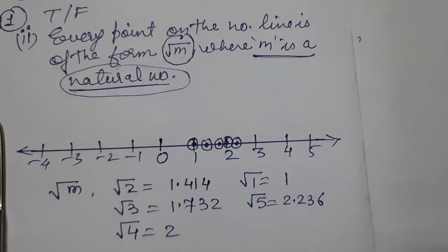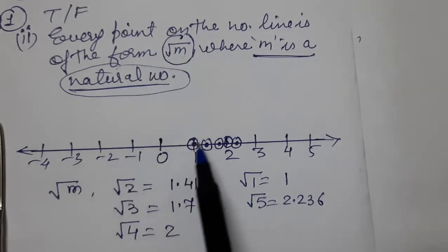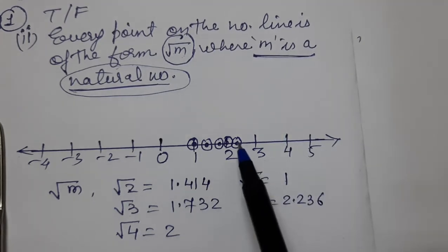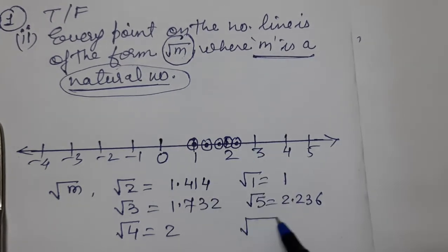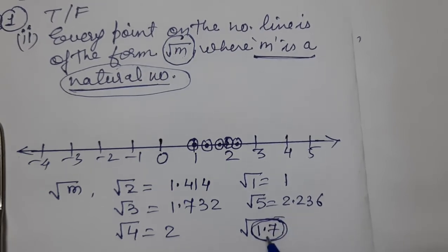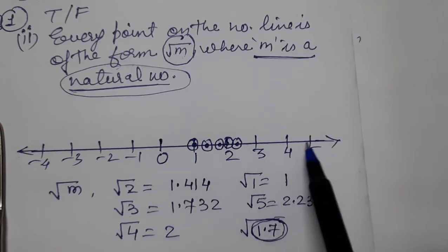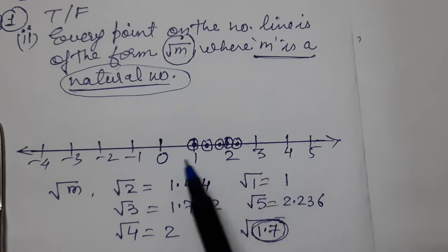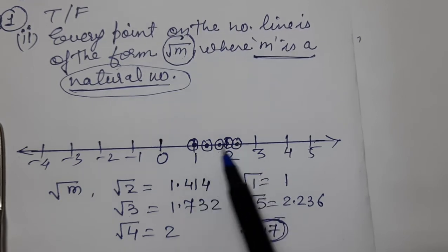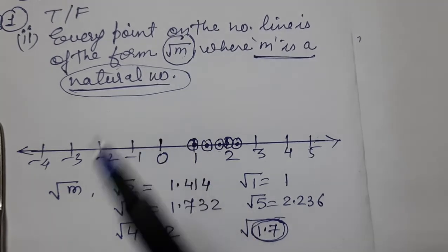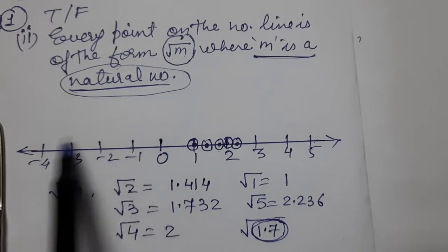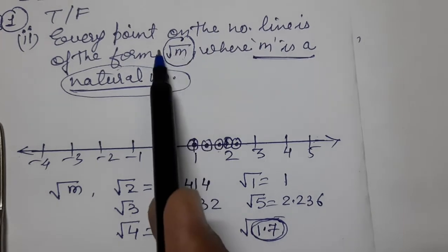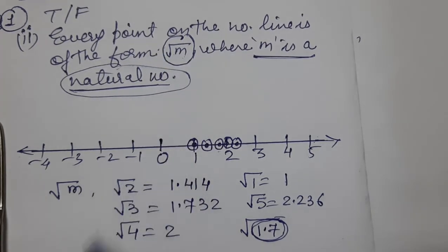But negative numbers also appear on the number line — they cannot be expressed as √m where m is a natural number. And there are many such points on the number line that cannot be shown using √m of a natural number. So the answer is FALSE.